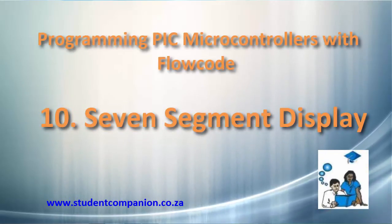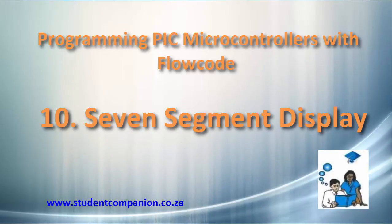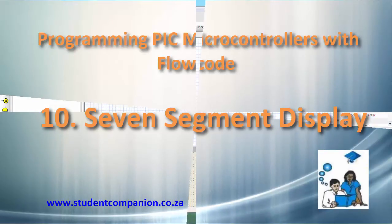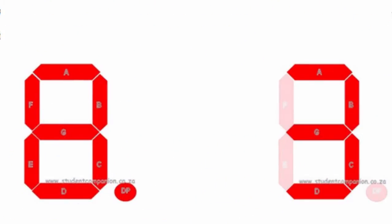Hi guys, welcome to this 10th tutorial in the series of Programming PIC Microcontroller with Flowcode for Absolute Beginners. In this tutorial, we're going to learn how to use 7-segment displays with Flowcode. The 7-segment display is the earliest type of electronic display that uses 7 LED bars arranged in a way that can be used to show the numbers from 0 to 9.